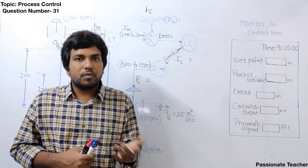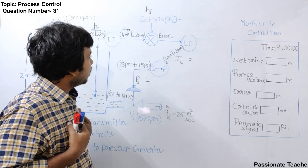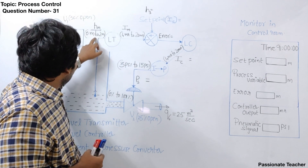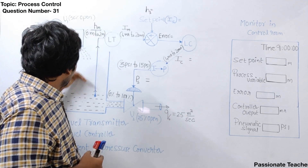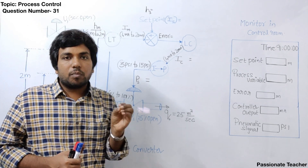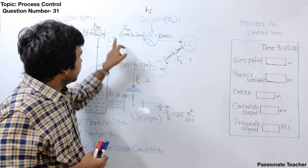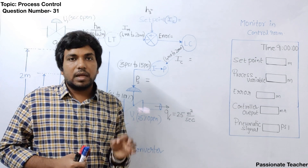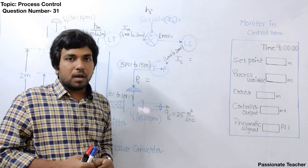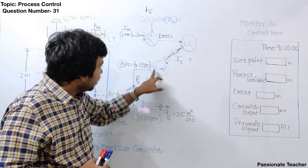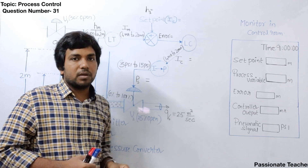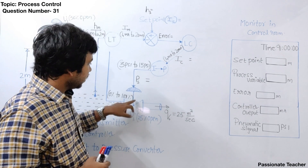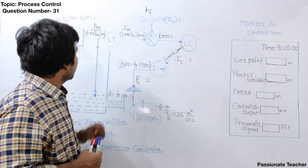Let us look at the variable names used here. The desired water level that we require is called the setpoint. The water level obtained from the process is called the process variable or measured variable. Whatever current we receive from the level controller is called the controller output. Whatever output signal we get after the I2P converter is called the manipulated signal or actuation signal, and that is given to the control valve.